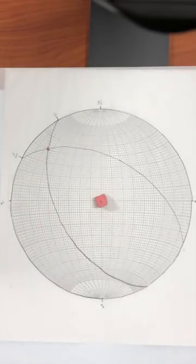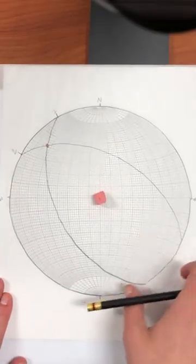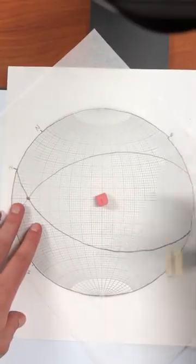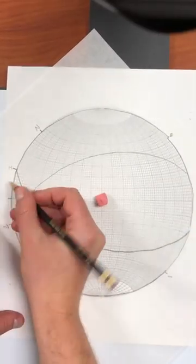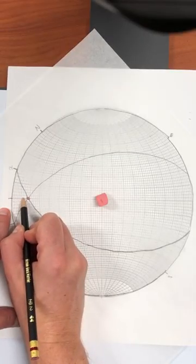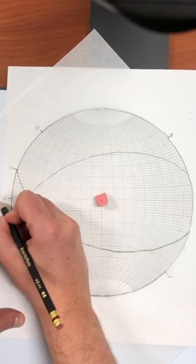So, so far so good. And then I can just read that value off in the same way that you would read any point off a stereonet. So I rotate it to the horizontal, put a tick mark, count in to get my plunge. So 10, 12, 14, 16, 18. Plunging 18.